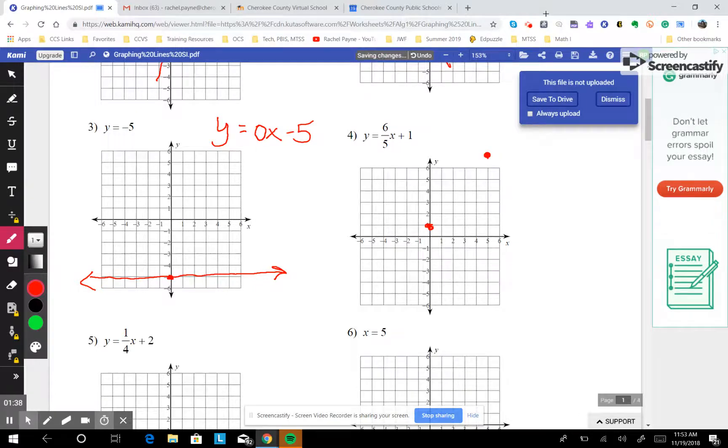Or if you want to, you can put negative 6 over negative 5, because a negative over negative is a positive number. So we can rise negative 6, 1, 2, 3, 4, 5, 6, run negative 5. 1, 2, 3, 4, 5.